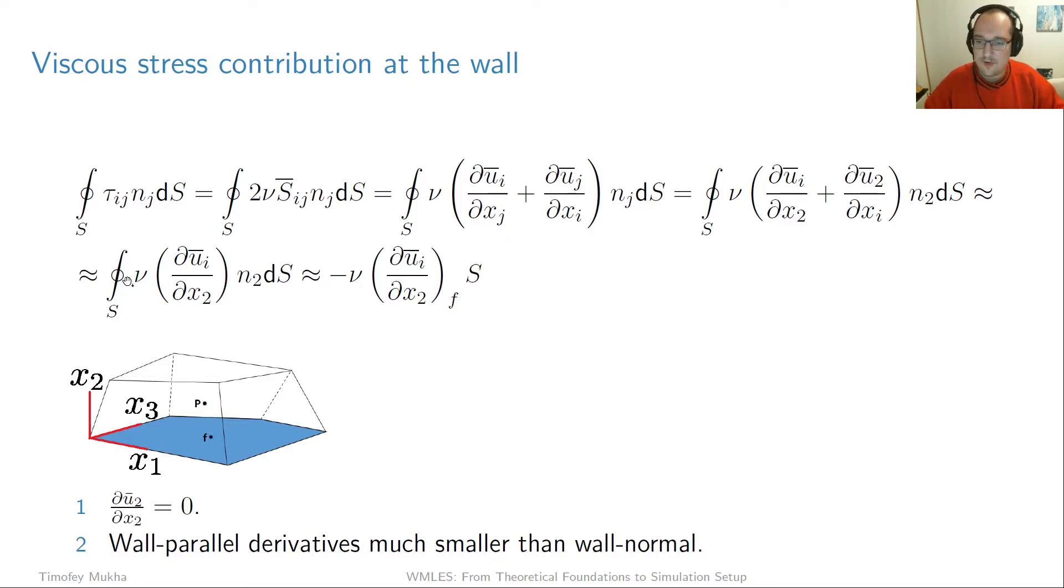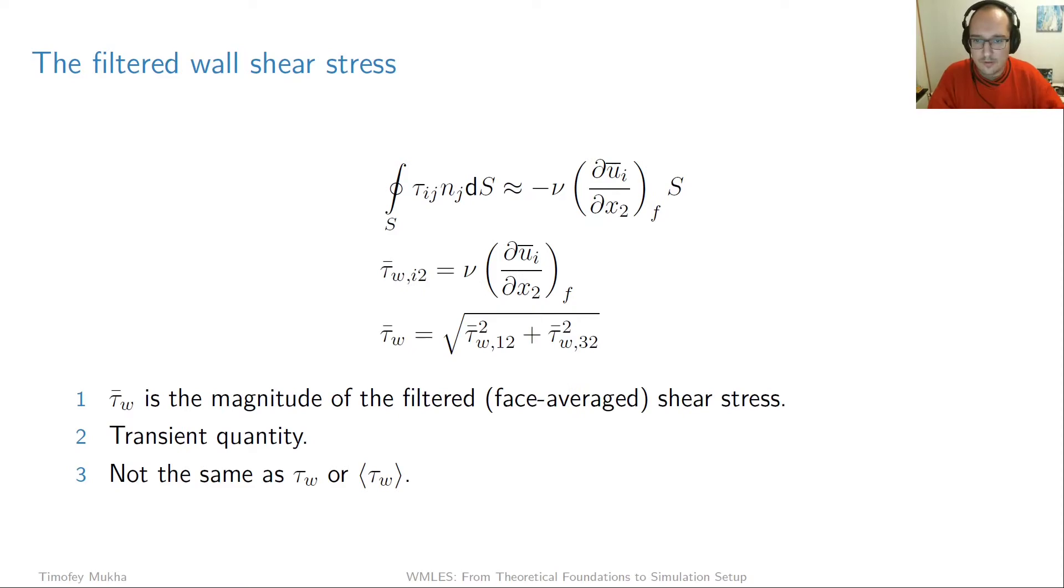But okay so now that we have this it's time to approximate the integral. And the way we do that in the finite volume method is that we evaluate this expression at the face center f and then we multiply it by the surface of the face which I'm going to call S. Finally we also have this minus here due to the fact that as we said the normal points downward so it's going to be a minus 1 the value of this n2 component.